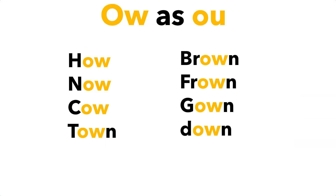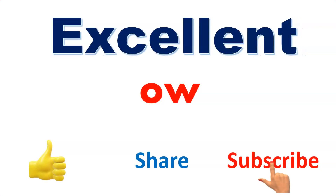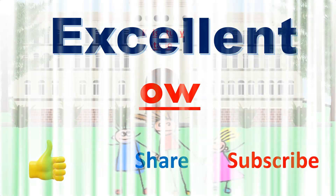Now OW as an 'ow' sound: how, now, cow, town, brown, down. Excellent! Today we learned the OW digraph, which is a vowel consonant digraph. We will meet again with one more phonics video. Bye!